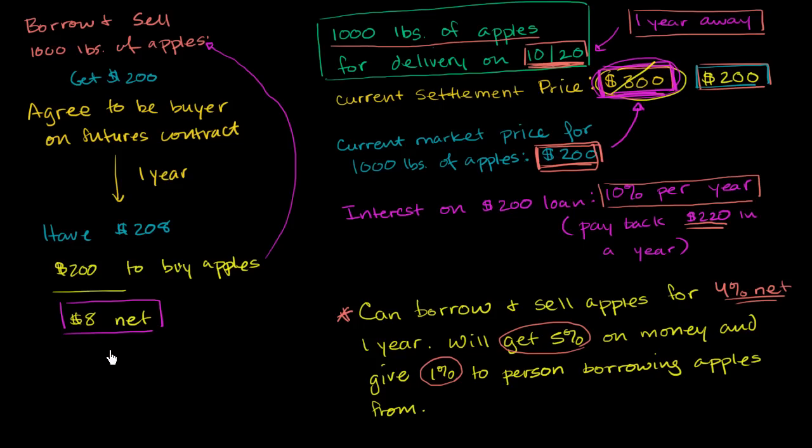If it's available, then people will do it, and what it will do is, it will increase demand to be the buyer here. So this price should go up, and it would increase supply on the selling side here. And so maybe this price over here would go down.